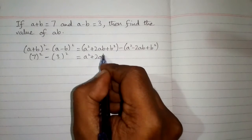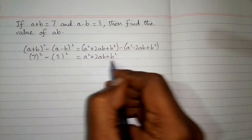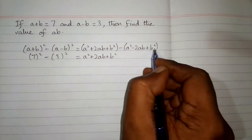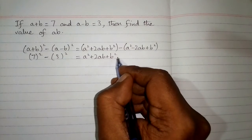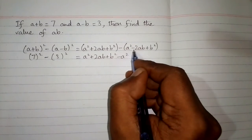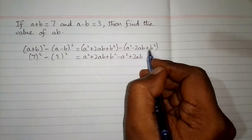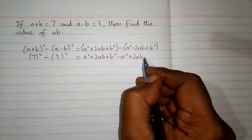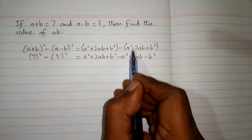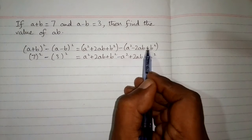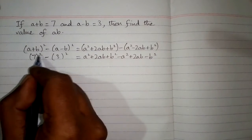When we remove the bracket, that is a square plus 2ab plus b square remains the same. And when we remove this bracket, the sign of all the terms will be changed, so we have minus a square, then minus 2ab becomes plus 2ab, and plus b square becomes minus b square.